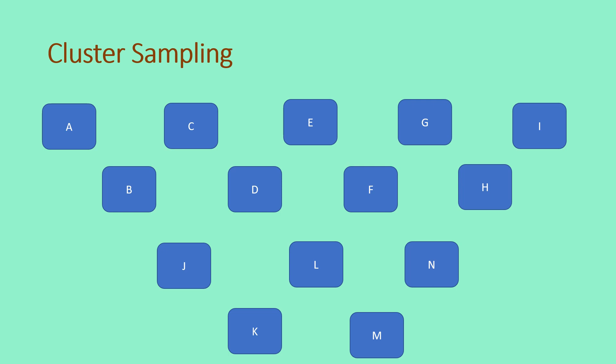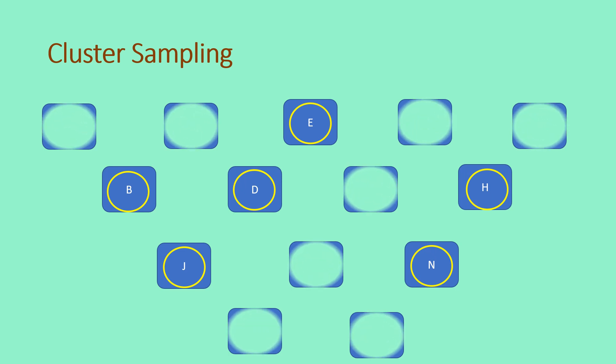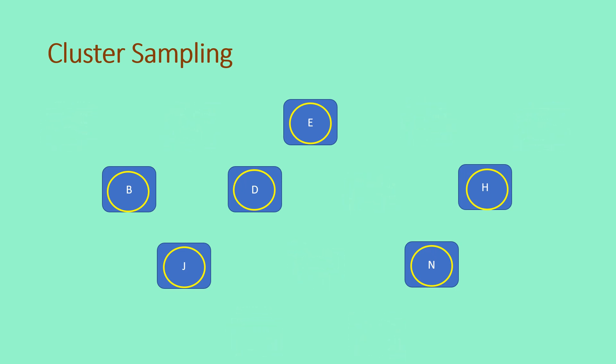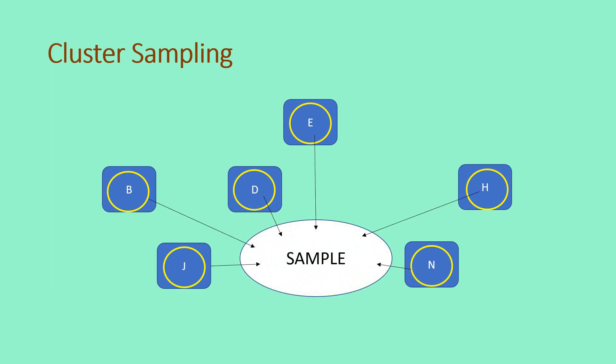we're going to choose six clusters. Randomly, we chose B, E, D, J, N, and H. After determining the groups or clusters that will be involved in the study, you can now choose the elements or individuals randomly from each group or cluster to form your sample. And that is how you conduct cluster sampling.